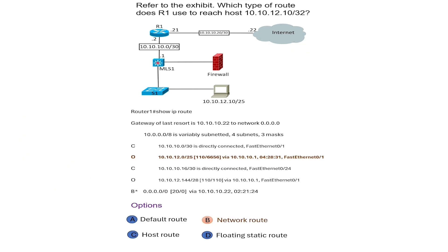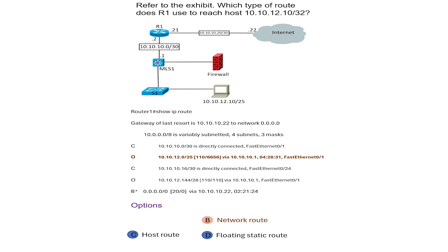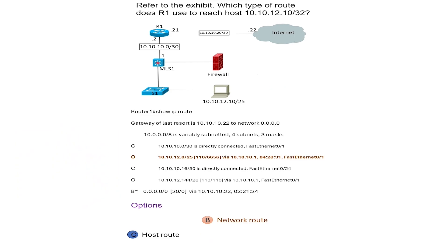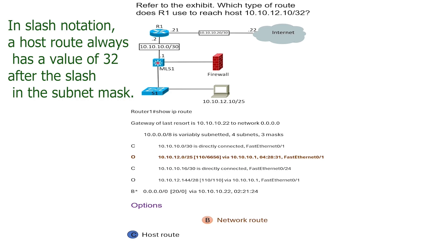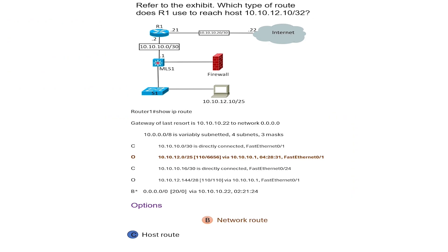Let us understand the remaining options. Routers use the default route when no other routes are available in the routing table. Since a route for the given address is available, option A is incorrect. Routers use the letter S to represent a floating static route in the routing table. Since the routing table has no floating static routes, option D is wrong. A host route belongs to a specific host and always has the value /32 in slash notation. As we can see, this routing table has no host routes, so option C is also incorrect.